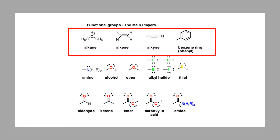Let's take a look at the first one, alkane. Alkane has one A and one E at the end — one single bond. So an alkane has a single bond. Alkene has one E and a second E — that's two E's — so that is a double bond. Alkene, double bond.